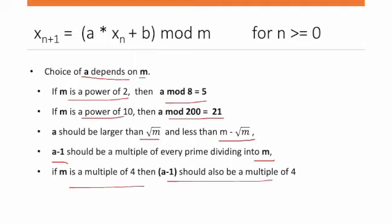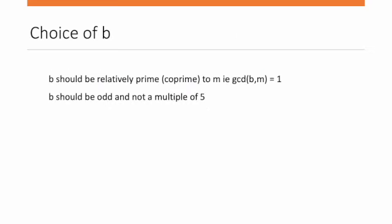Now let's take an example for the choice of b. Given m = 4096 and b = 853. Since 853 is a prime number, it has only 1 and 853 as divisors.